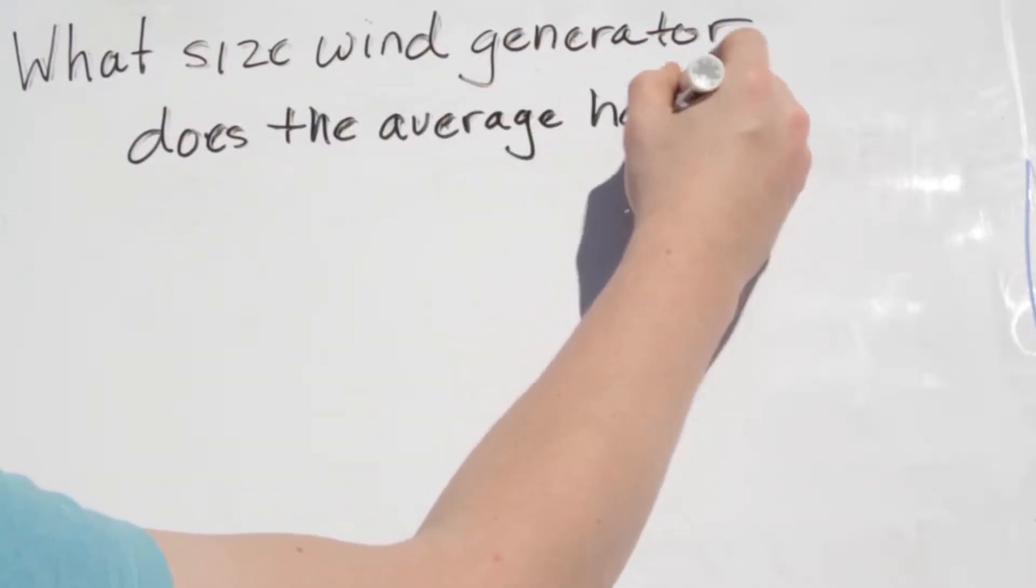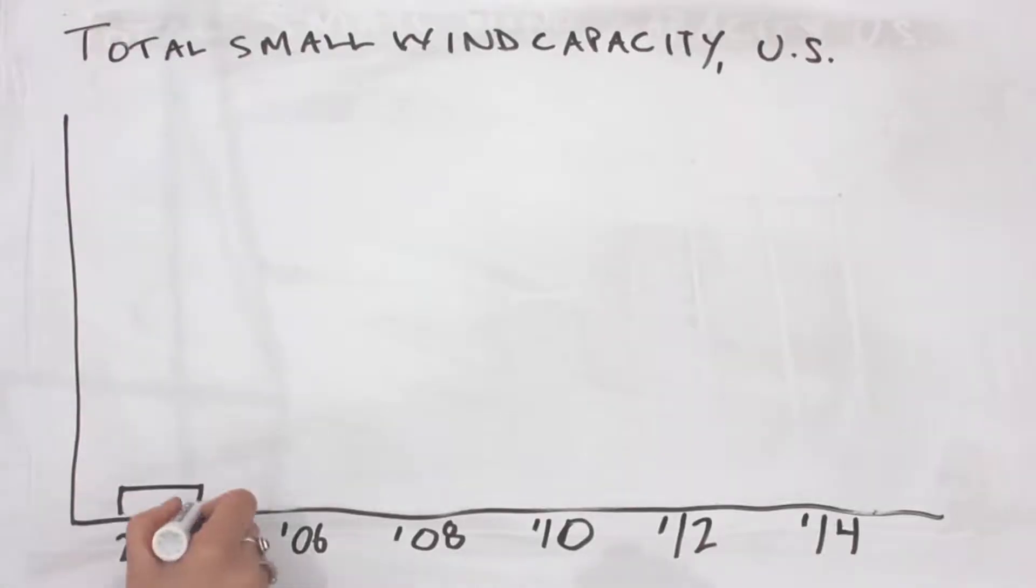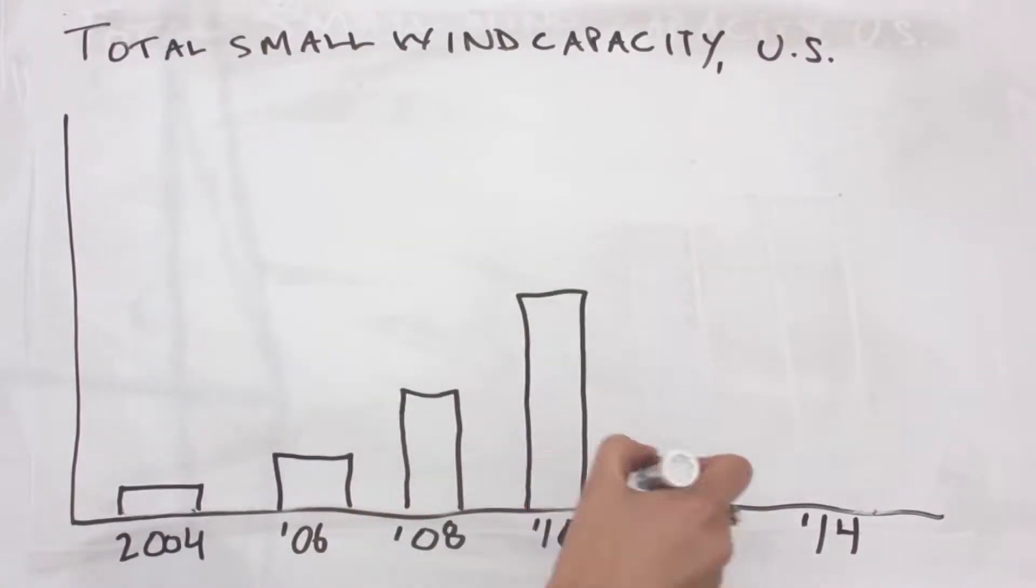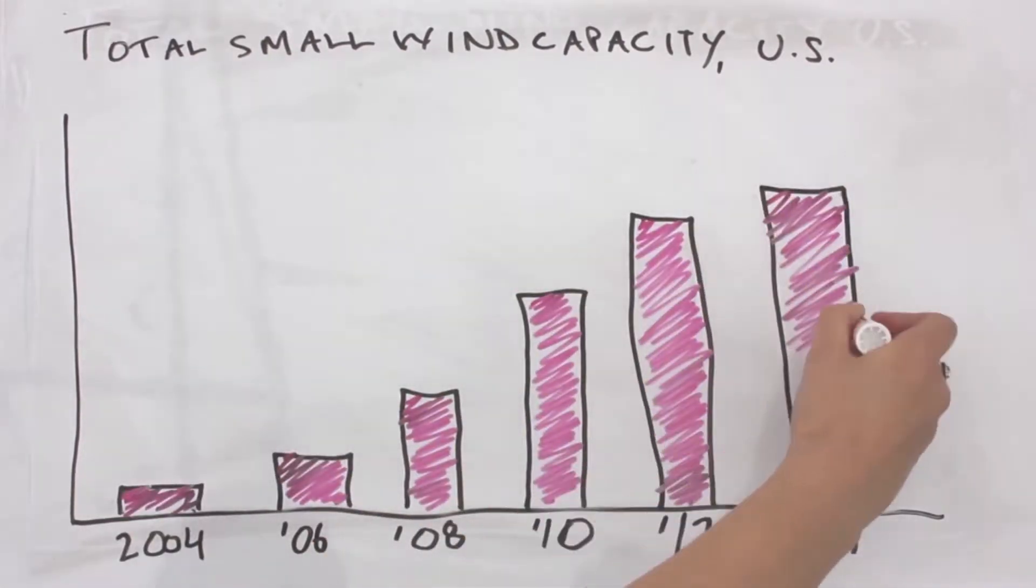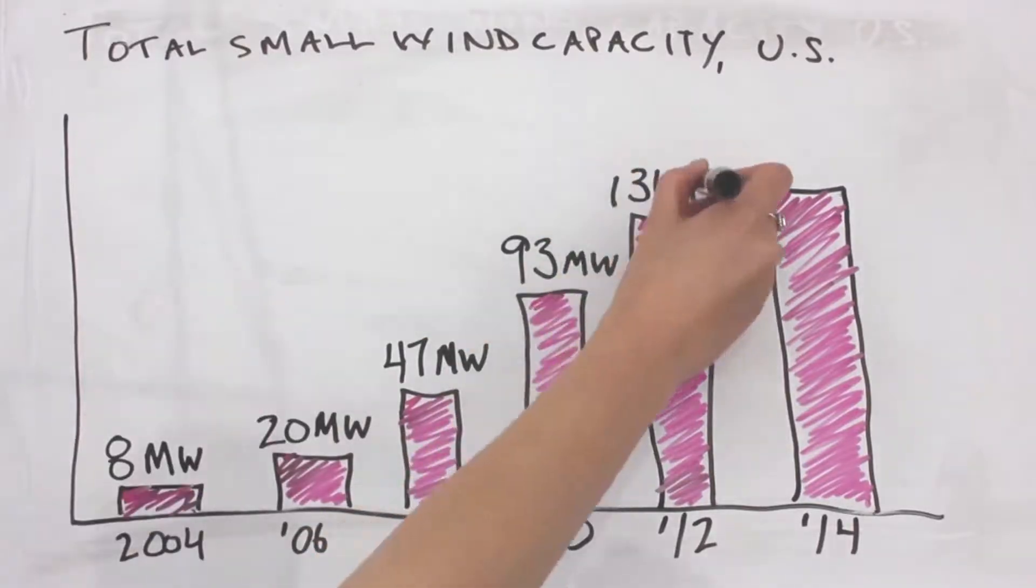It's a great question. Recently, small wind generation capacity has grown in the U.S. from a total of about 8 megawatts in 2004 to 140 megawatts in 2014.